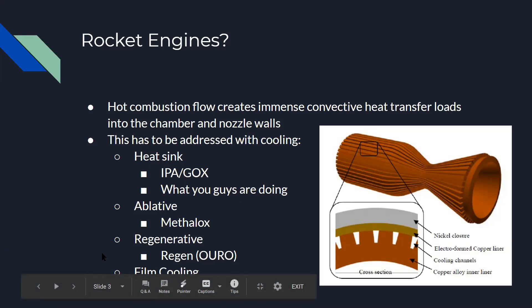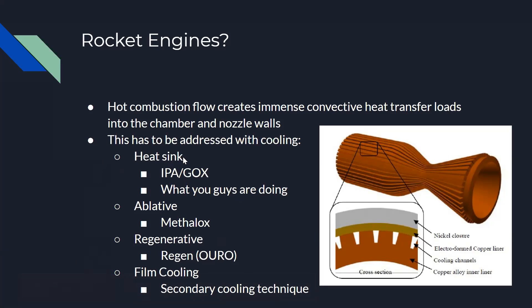Heat sink cooling is where you have a large hunk of metal with a large capacity to conduct heat. The energy from the combustion flow conducts through the walls and heats up the entire metal mass. There's no actual cooling happening — energy goes in and doesn't come out — so temperature rises and you have a finite firing time before it starts melting.